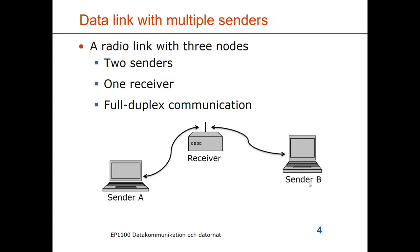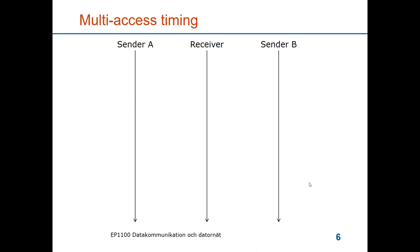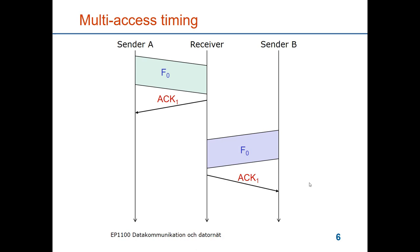Let's assume a setup of one radio link with three nodes. I have drawn the link here as two arrows, but it is really the same radio link, meaning they are communicating in the same frequency band. The two senders communicate with one receiver, and we assume full duplex communication, meaning all entities can send and receive at the same time. Sender A sends a frame to the receiver and it is acknowledged. Sender B sends a frame and it is acknowledged. So it works as we hoped.